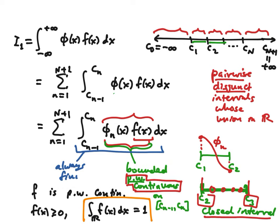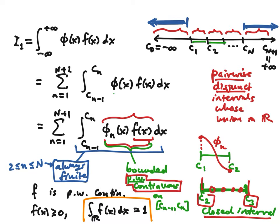These integrals are always finite, except possibly at the two ends. As long as little n is between two and big N, these integrals have to be finite. But at the two ends you have an unbounded region of integration — from c_n to plus infinity, and similarly on the other end — so there we can have an improper integral.